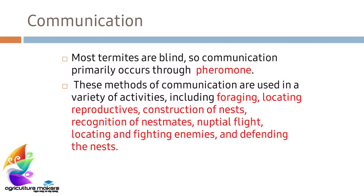Regarding communication, as most termites are blind they use pheromones for communication, including for foraging, locating reproductives, finding nestmates, or fighting with enemies. The most common way of communication is through antennation.